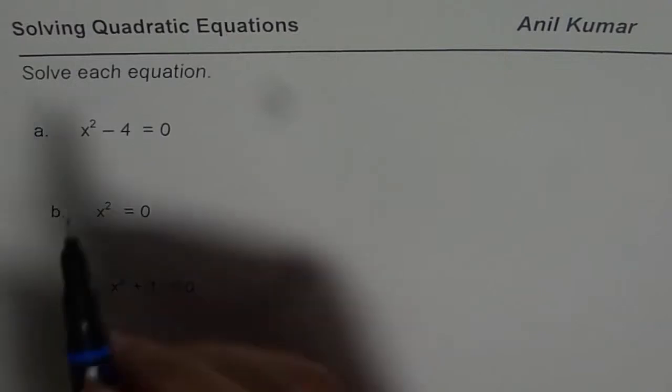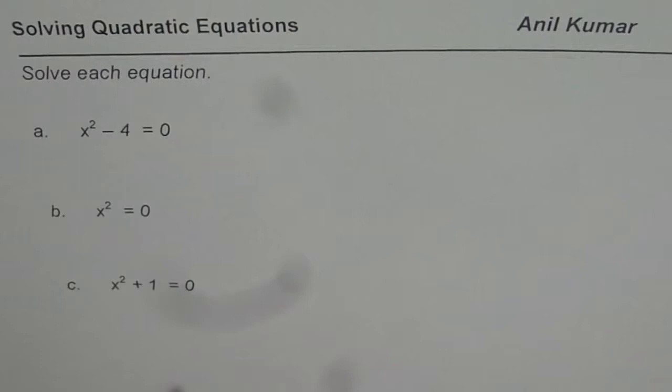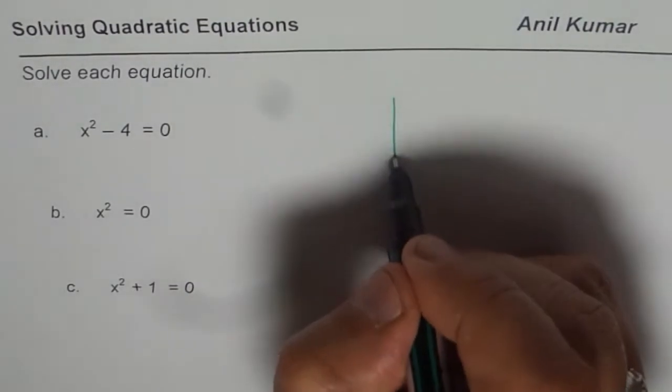Let us begin from the very first one, part A. x square minus 4 equals to 0. We can do it in actually two different ways. I'll show you both the ways to solve such an equation.